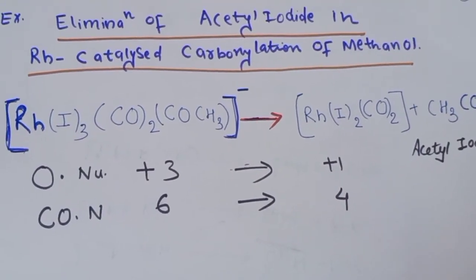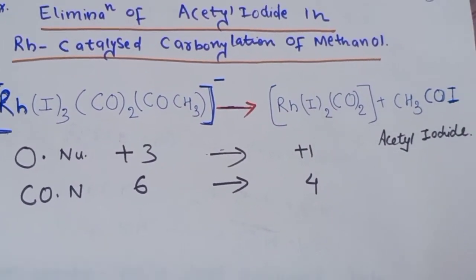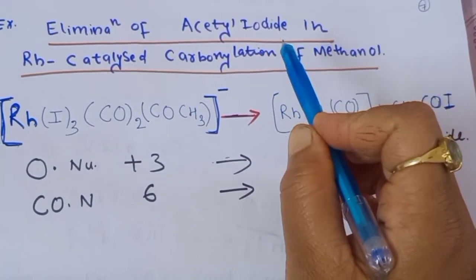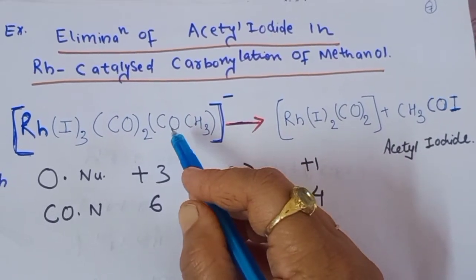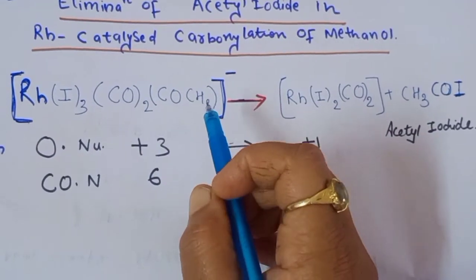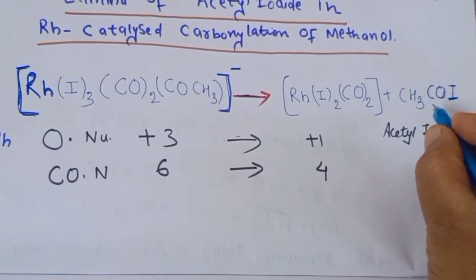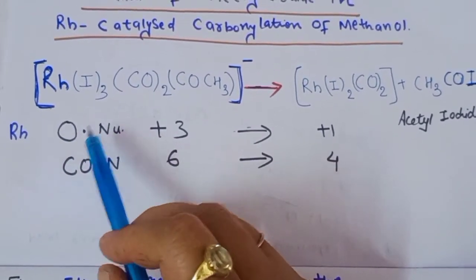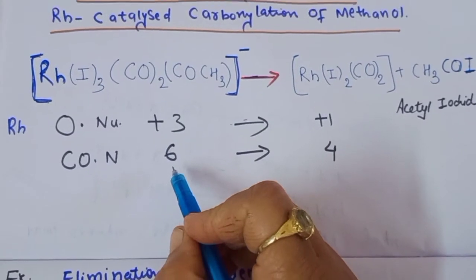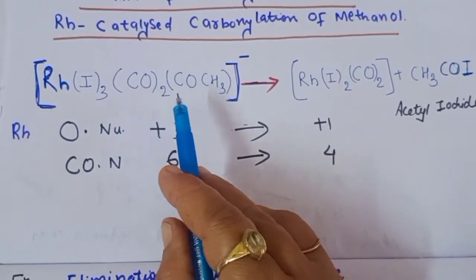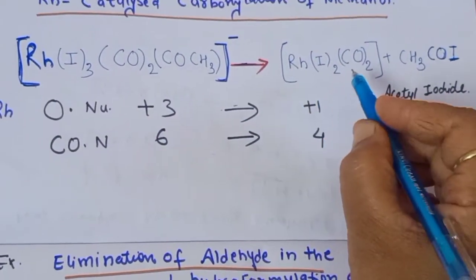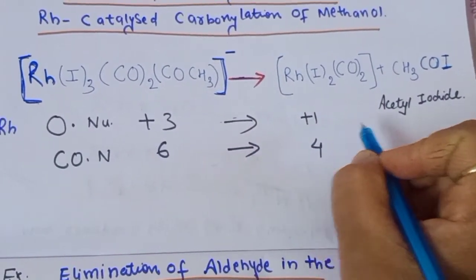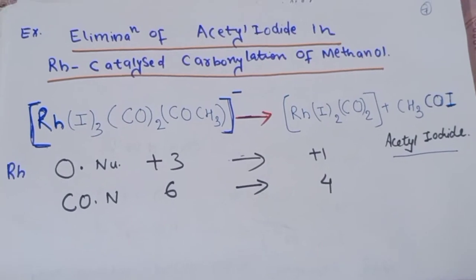One example is the elimination of acetyl iodide in the rhodium-catalyzed carbonylation of methanol. In this anionic rhodium complex, the acetyl group CH3CO and one iodine are eliminated as CH3COI. The remaining complex is Rh(I)(CO)2I2. The coordination number decreases from 6 to 4, and the rhodium oxidation state changes from +3 to +1.